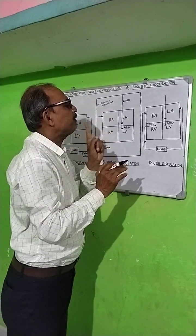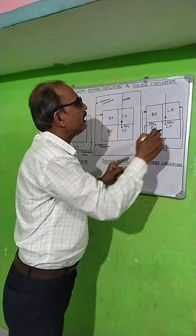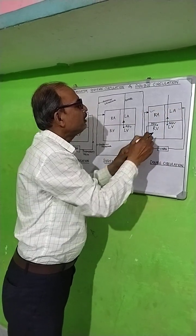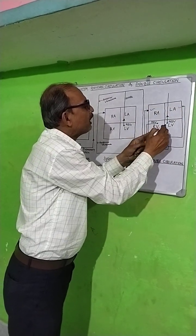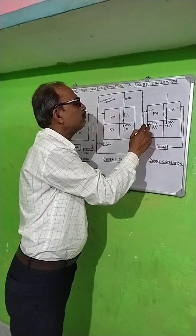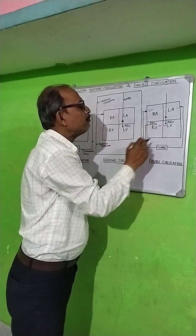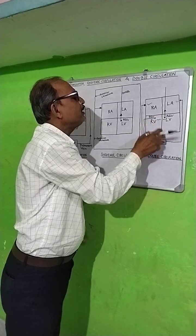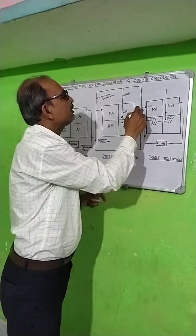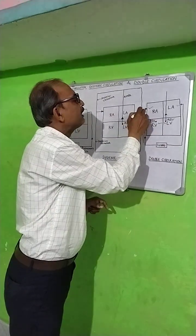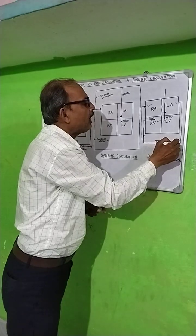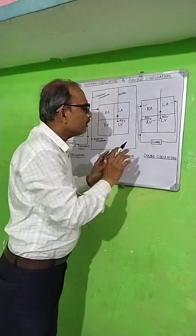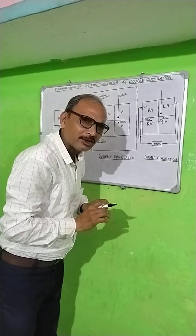You see, the blood enters the heart twice — once through pulmonary circulation and once through systemic circulation. This is the double circulation.